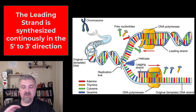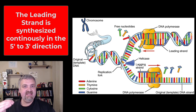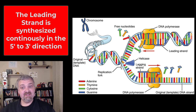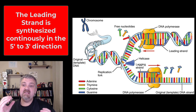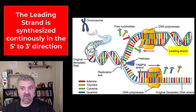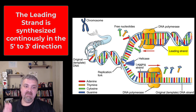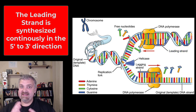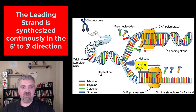Elongation is DNA polymerase grabbing on, and anywhere it sees an A it lays down a T, if it sees a T it puts down an A, if it sees a C it puts down a G, if it sees a G it puts down a C. It's just going to go and go and go until it runs to the end. This is straightforward on the top strand — the leading strand — because DNA polymerase is copying DNA in the 5' to 3' direction. It's not going to be so simple with the other strand, called the lagging strand.